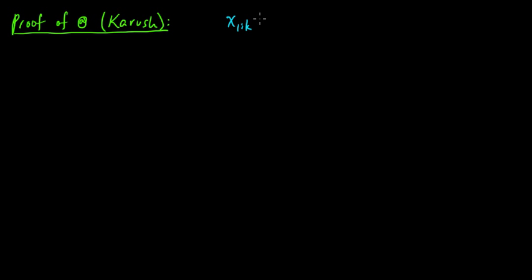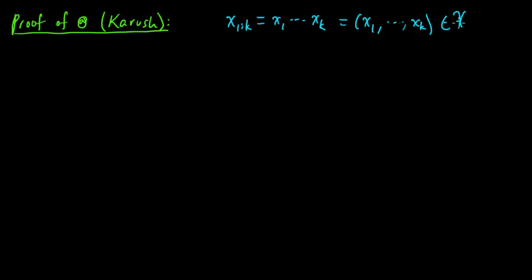For the proof I'm going to introduce a little bit of notation which will be useful later on as well. I'm going to use x subscript 1 through k for a string of symbols x₁ to xₖ, or equivalently a sequence x₁ through xₖ in the set 𝒳^k. Here 𝒳 is our source alphabet, and 𝒳^k is the set of all sequences of length k from that alphabet.